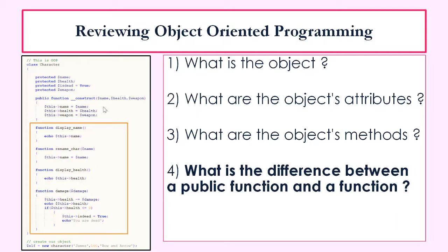In the constructor, we are just assigning the values entered into the attributes. For example, the first name attribute 'James' would go into name, the health value '100' would go into health, and 'bow and arrow' would go into the weapon attribute. What is the difference between a public function and a normal function? Well, there is no difference. Writing 'public' in front of a function just gives more information about the access rights. In object-oriented programming, writing 'public function' and just writing 'function' are the same.